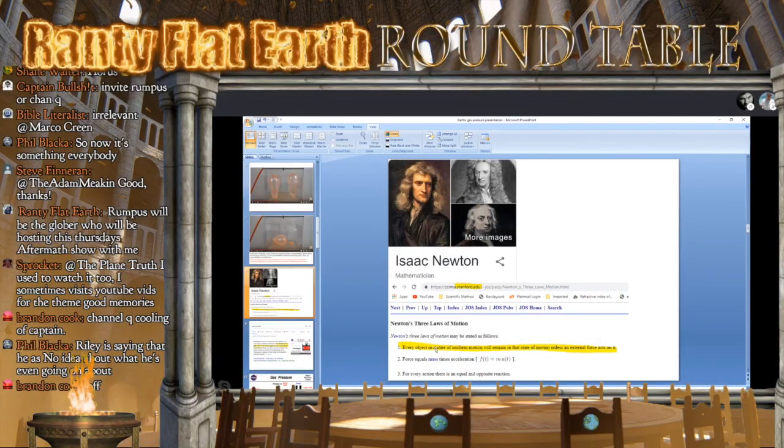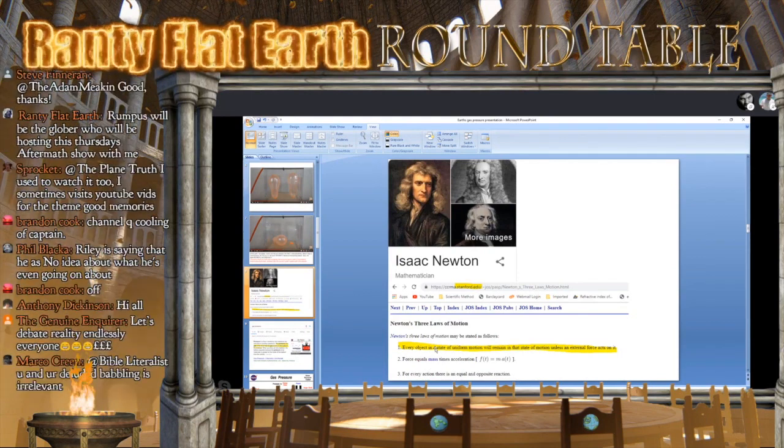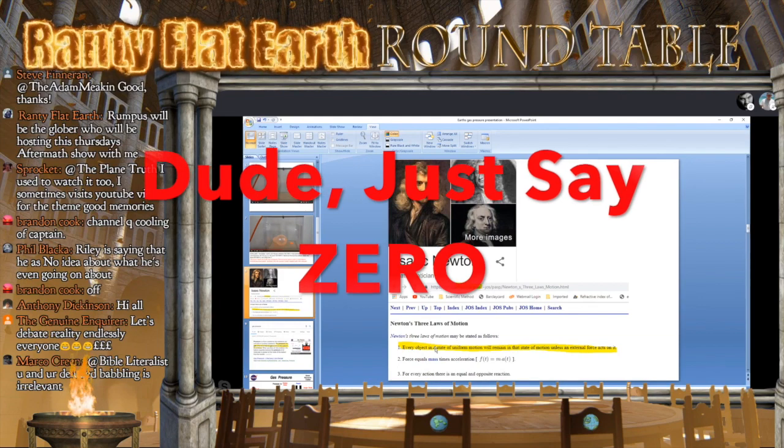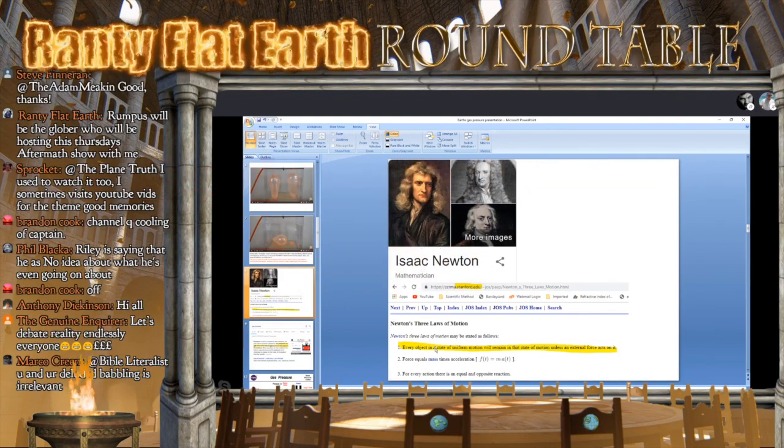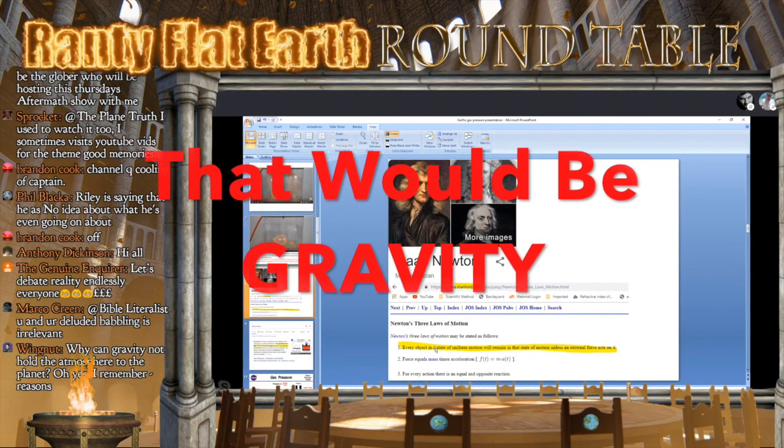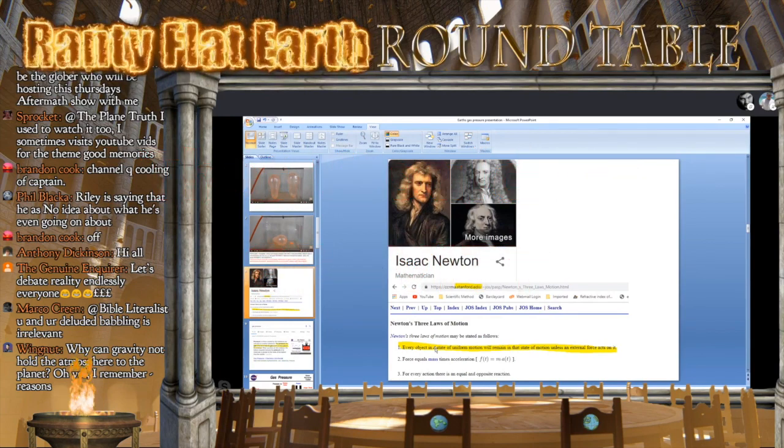If the atmosphere is under pressure, and it's pressing up against something, which in our case is the vacuum of space at 10 to the minus 17 tor, then there needs to be a force to stop it from bursting into the atmosphere, bursting into the vacuum of space. Because it requires a force according to Newton's laws.